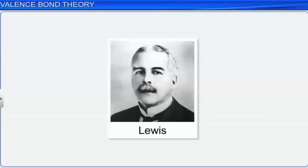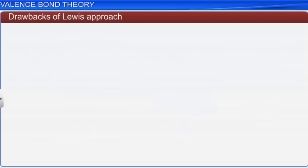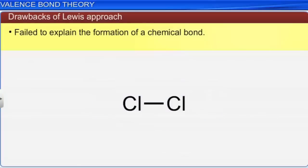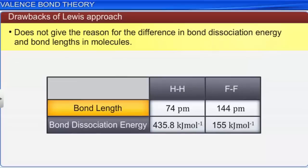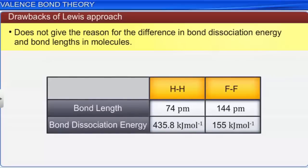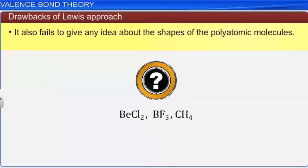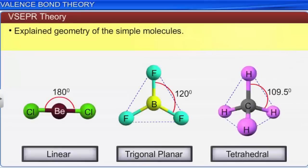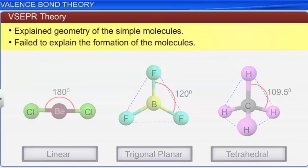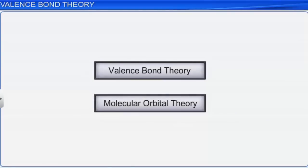Although Lewis's approach to chemical bonding helps us write the structure of molecules, it suffers from certain drawbacks: it fails to explain the formation of a chemical bond, does not explain the difference in bond dissociation energy and bond lengths in molecules like hydrogen and fluorine, and fails to give any idea about the shapes of polyatomic molecules. The VSEPR theory gives the geometry of simple molecules but fails to explain their formation. To overcome these limitations, the valence bond theory and the molecular orbital theory, based on quantum mechanics, were introduced.